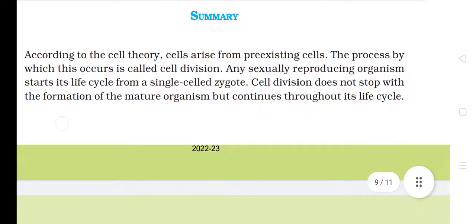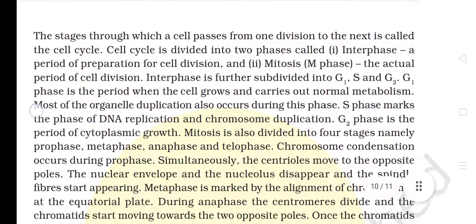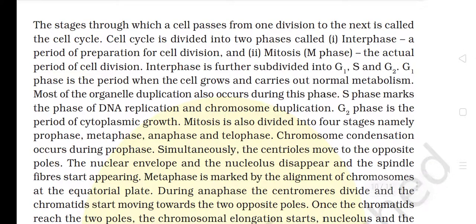Summary. According to the cell theory, cells arise from pre-existing cells. The process by which this occurs is called cell division. Any sexually reproducing organism starts its life cycle from a single cell called the zygote. Cell division does not stop with the formation of the mature organism but continues throughout its life cycle. The stages through which a cell passes from one division to the next is called the cell cycle. The cell cycle is divided into two phases: interphase, a period of preparation for cell division, and mitosis (M phase), the actual period of cell division.